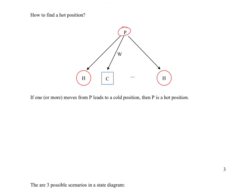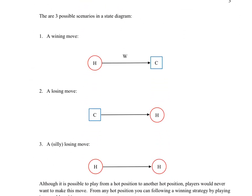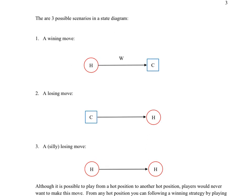Let's look at three possible scenarios that can show up in a state diagram. You could be making a winning move — following one step of the winning strategy — which is playing from hot to cold. You can indicate that with a W over top of it, and you'd be happy about making that type of move.